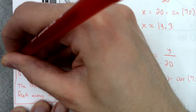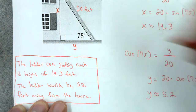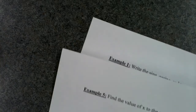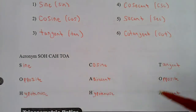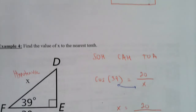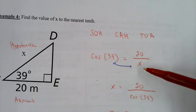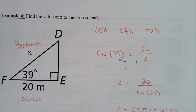That was a difficult lesson. Make sure you know the acronym SOHCAHTOA. When solving for X in the numerator, you multiply; when X is in the denominator, you divide. Make sure you know that acronym — SOHCAHTOA.